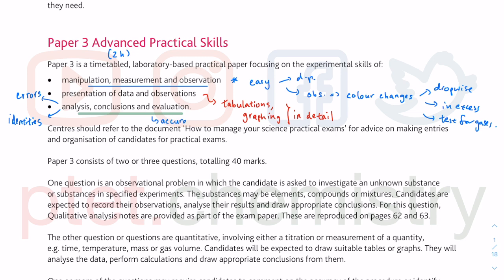You have accuracy, but you also have something called reliability. Accuracy is to do with how accurate the data is — are you very close to the actual value? Reliability is to do with: if you repeat the experiments, can you get the same result?